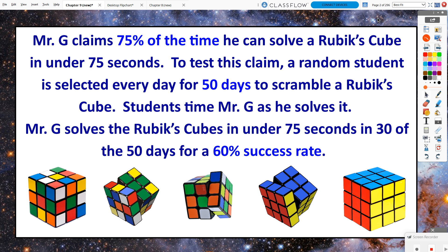Mr. G claims 75% of the time he can solve a Rubik's Cube in under 75 seconds. To test this claim, a random student is selected every day for 50 days to scramble a Rubik's Cube, and students time Mr. G as he solves it. Mr. G can solve the Rubik's Cube in under 75 seconds in 30 of the 50 days, for a 60% success rate.